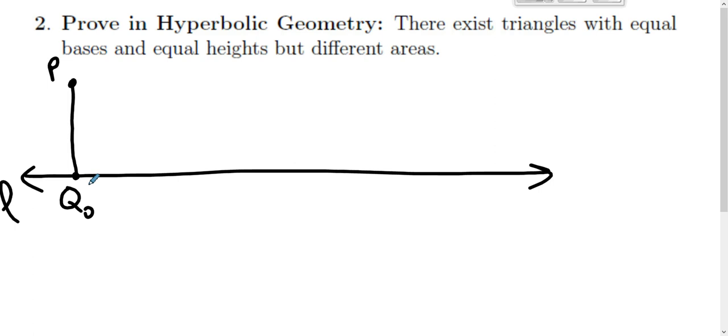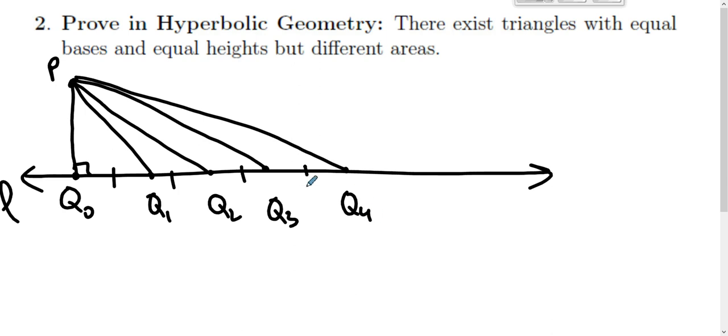The way we do this is very straightforward. We have some line L that contains some points. I'm going to call this Q sub zero because we're going to run a string of Q's in a moment. We're going to drop some perpendicular from some point P that's not on the line. We're going to construct triangles where the distance between Q sub i minus one and Q sub i is the same all the way through to forever.